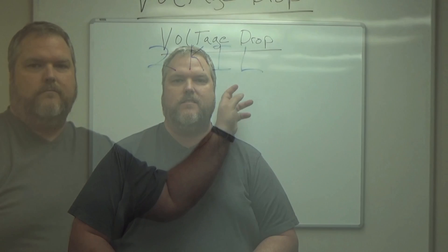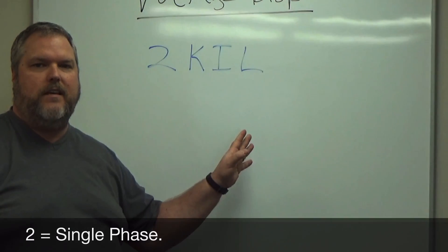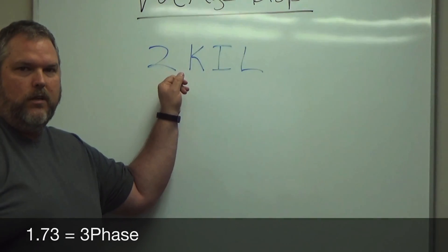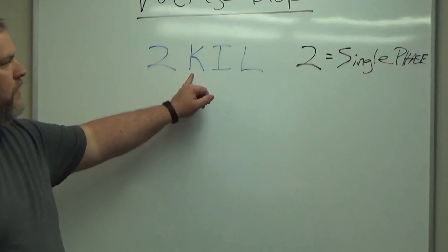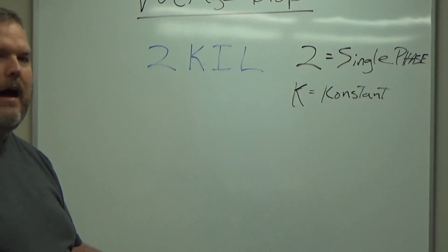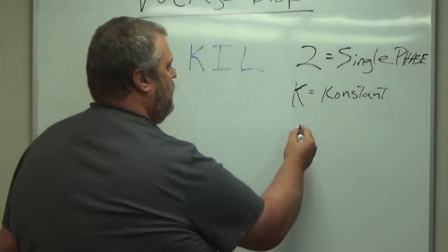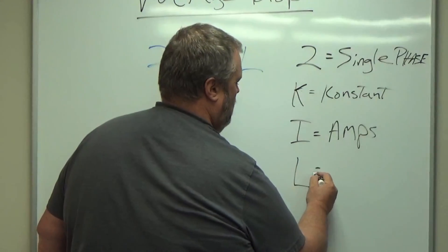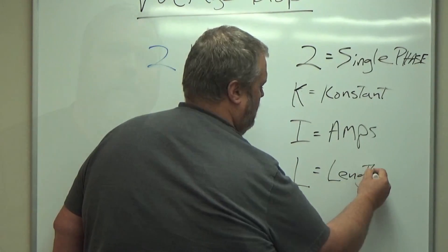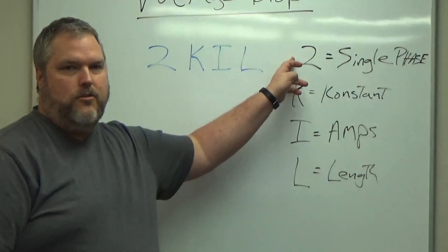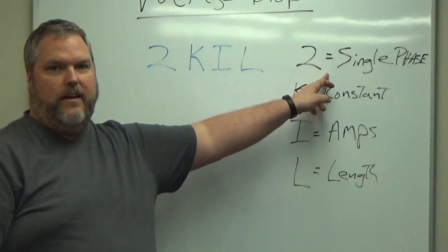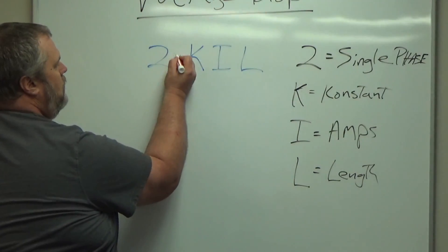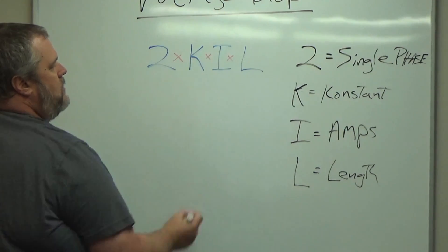One of the things you're going to need to understand is this is one of the biggest keys that we need to remember in doing our formula. So the 2 is going to represent single phase. The K is going to stand for our constant. I, we should know from basic Ohm's law, I equals Amps. And L is going to equal length. When it's written together, this is telling us we are going to do 2 times K times I times L.